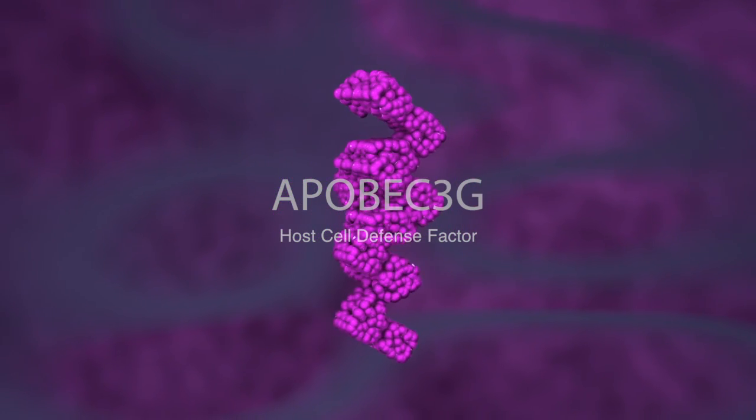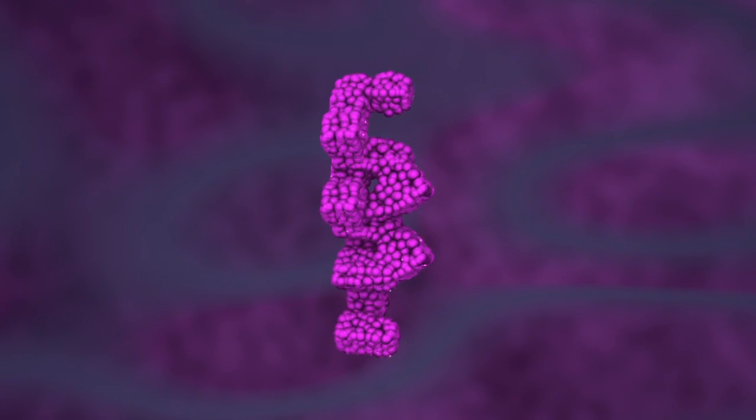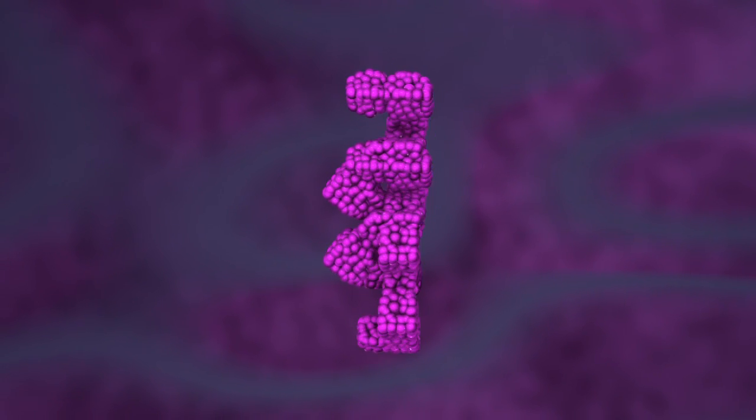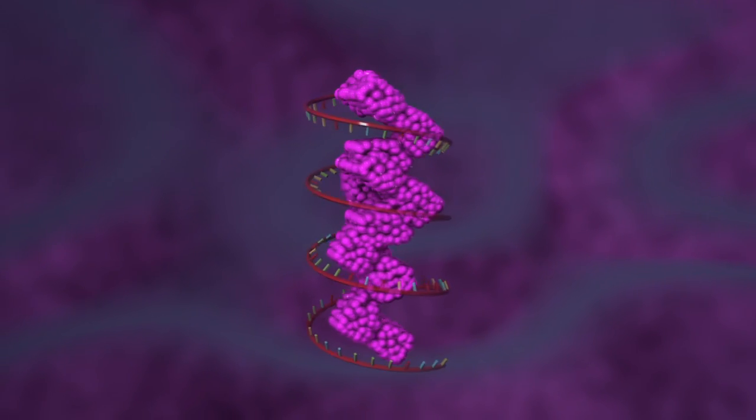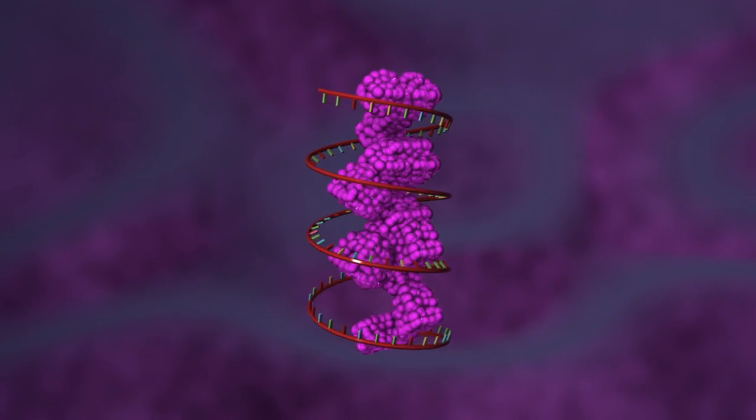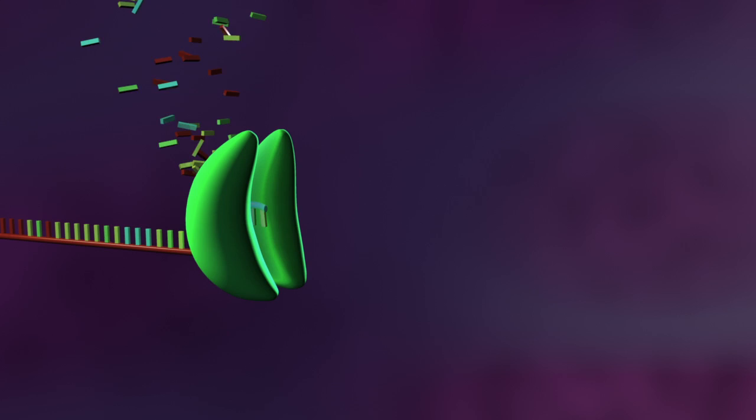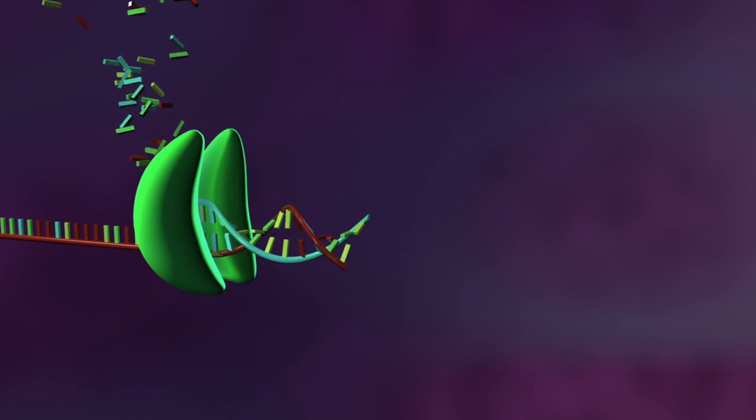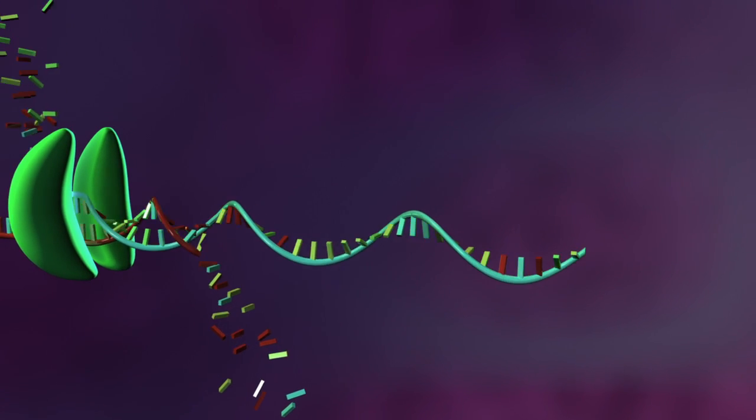ApoBec3G, also known as A3G, is an enzyme that can protect cells from HIV. Ironically though, A3G is shut down in infected cells by forming aggregates with cellular RNA. Without the threat of attack from A3G, HIV reverse transcriptase replicates the RNA genetic material into a strand of DNA while degrading the RNA template shortly thereafter.